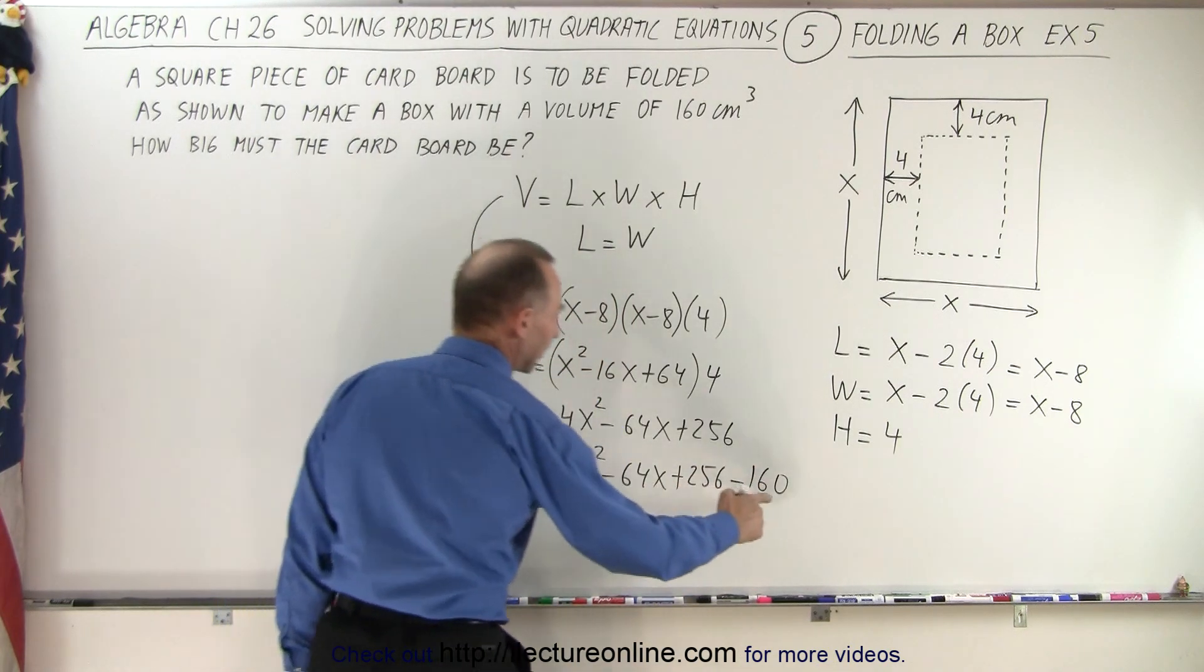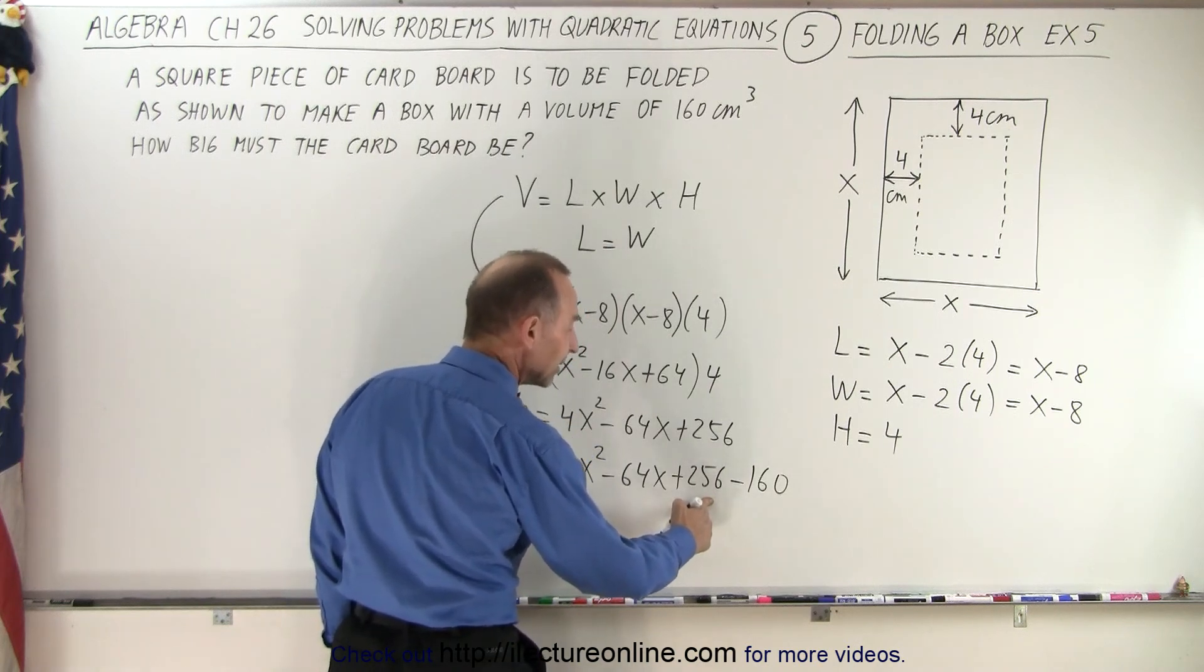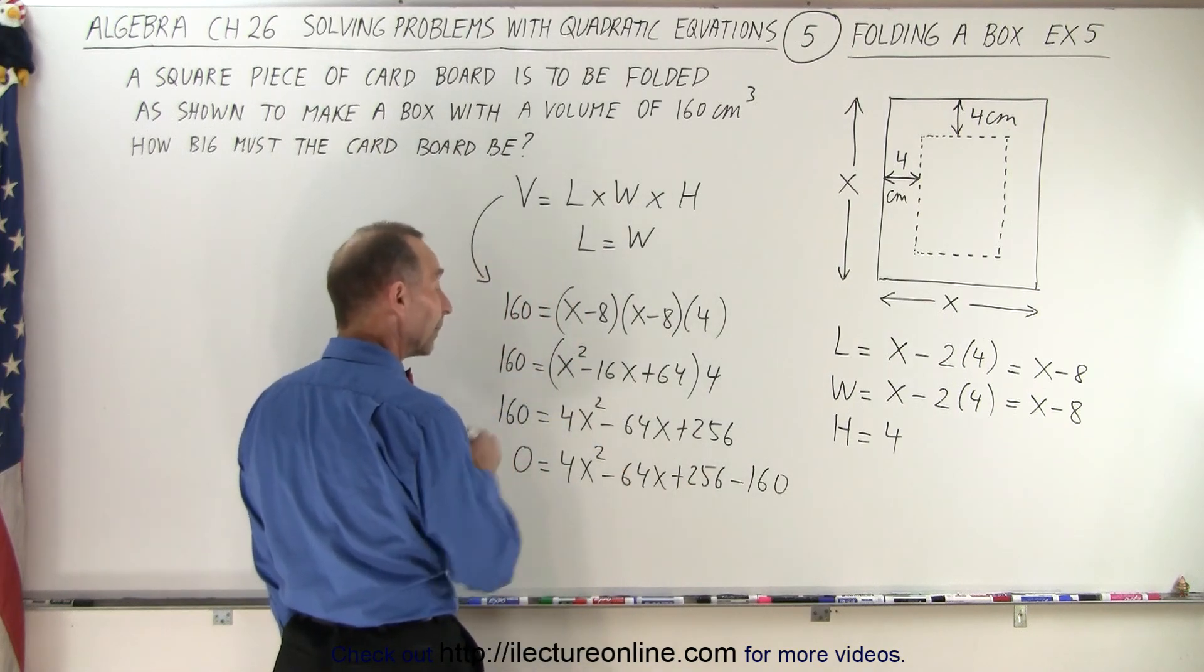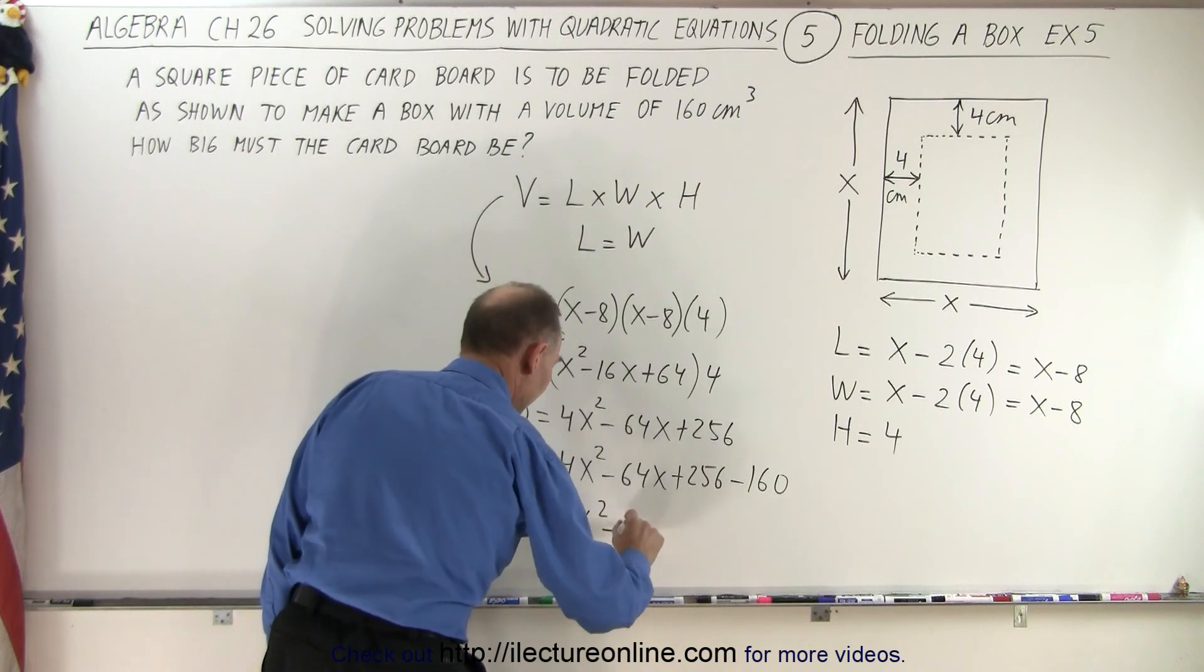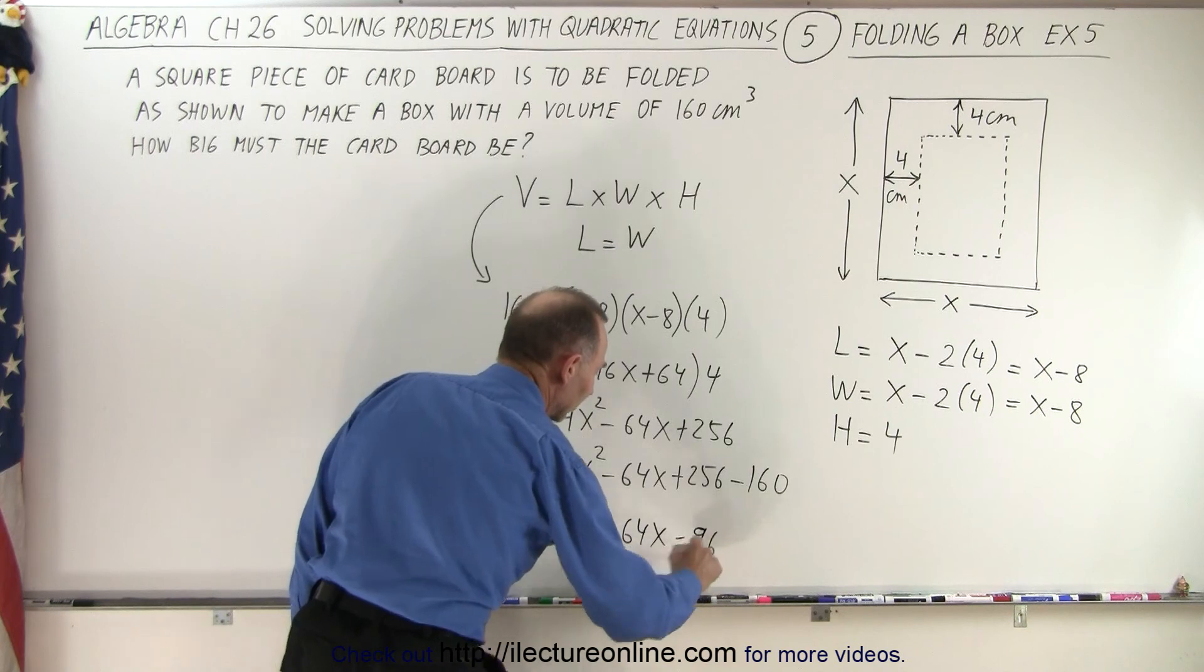And if we subtract this from this I think we end up with 90, 96, 96. Yep, alright. So 0 equals 4x squared minus 64x minus 96.